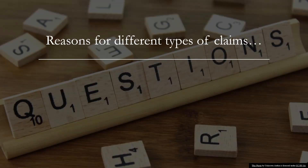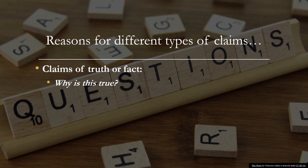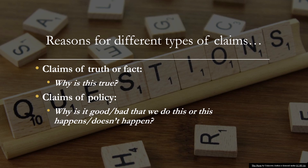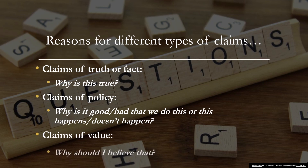When you know what kinds of claims are presented in an argument, you can ask yourself different questions depending on the type of claim. For claims of truth or fact, you can ask: why is this true? For claims of policy: why is it good or bad that we do this or that this happens or doesn't happen? For claims of value: why should I believe that? Asking yourself these questions will not only help you identify the reasoning used, but will also help you determine if the reasons given fully answer your question as you evaluate the argument.